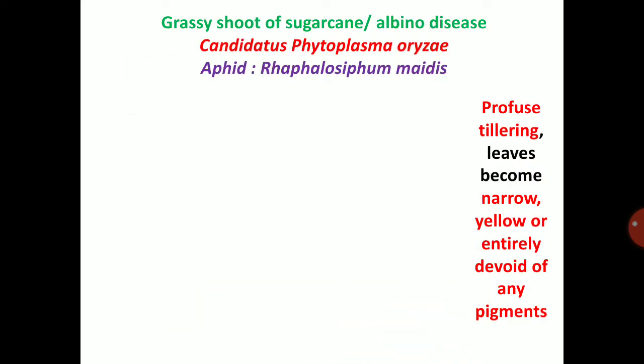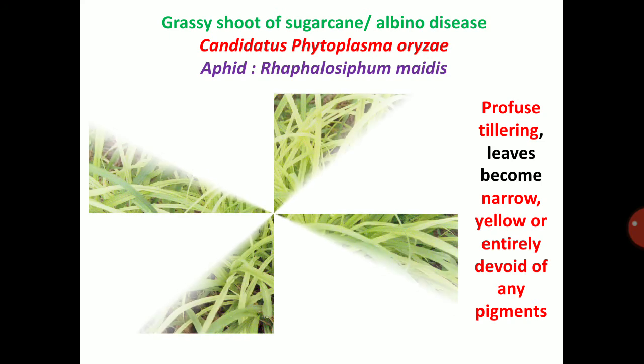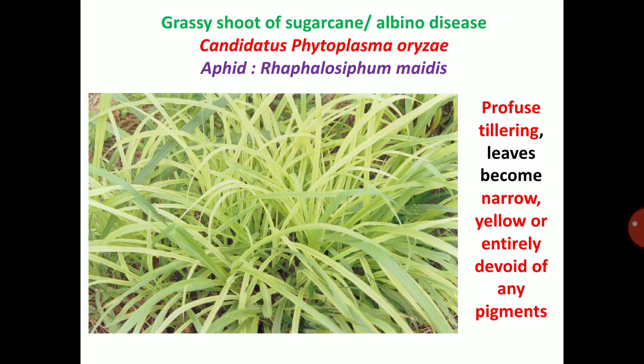Grassy shoot of sugarcane, also called albino disease — infected crop will produce profuse tillering; leaves become narrow, yellow, or entirely devoid of pigments, causing albinism with white color leaves. The plant does not produce any cane and looks like grass. Candidatus Phytoplasma is mainly transmitted through the aphid Rhopalosiphum maidis.